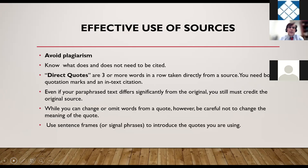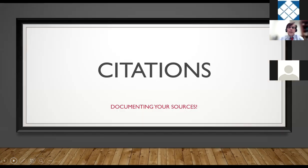In summary, for the effective use of sources, you need to avoid plagiarism — you need to know what it is, what it does, and what does and does not need to be cited. You need to know about direct quotes and when to use them: when you use three or more words in a row taken directly from a source, you need quotation marks and an in-text citation. Even if you paraphrase a text that differs significantly from the original, you still must cite the original source. While you can change or omit words from a quote, be careful not to change the meaning, and use signal phrases effectively to make your paper flow.